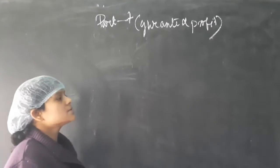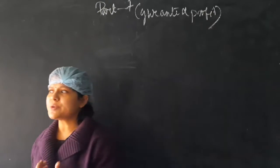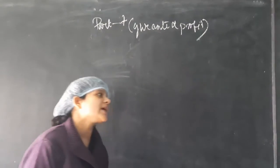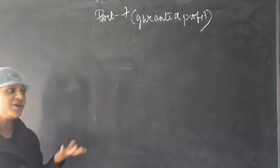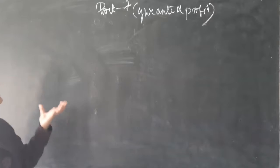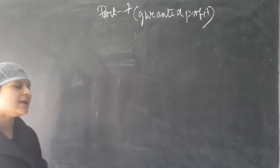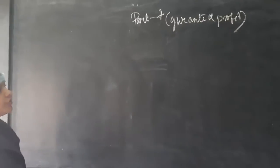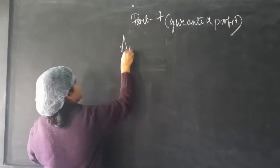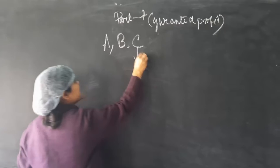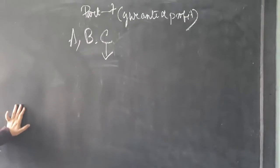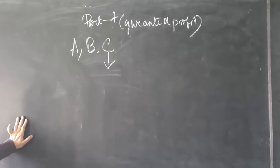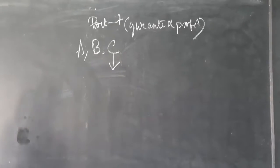What is the meaning of guaranteed profit? In a partnership business, some partner enters with the demand that they should get a guaranteed profit whatever the profit of the firm will be. This means a partner says: I will join the business provided I get a minimum guaranteed amount of rupees. Suppose A, B, C are partners and C is the guaranteed partner — she will get the guaranteed profit whatever the earning capacity of the business.